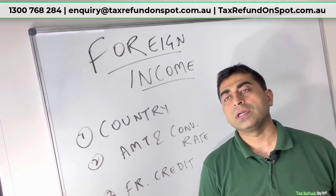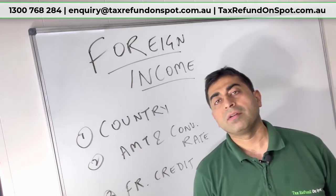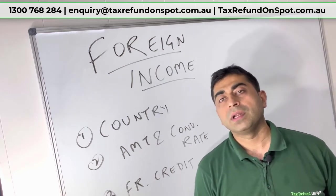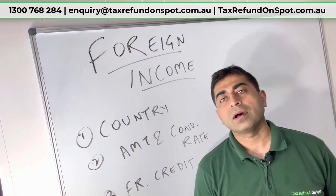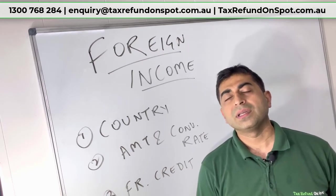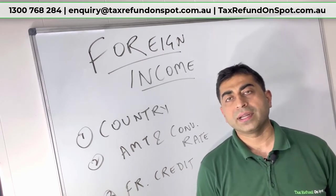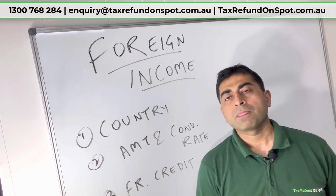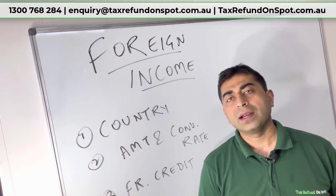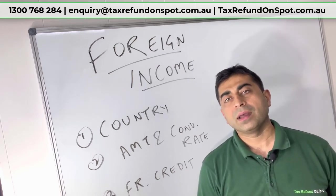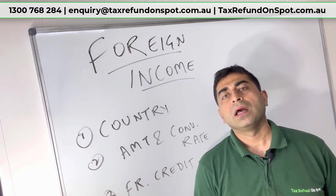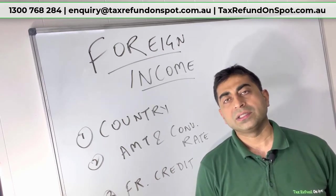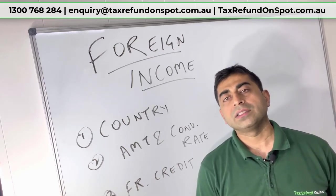You get a credit for foreign tax paid because of double taxation rules. For example, if you earn $100,000 in the US and paid $30,000 tax there, you must include $100,000 as overseas income and $30,000 as tax paid.